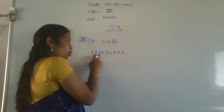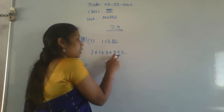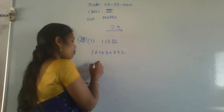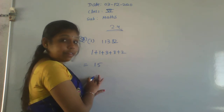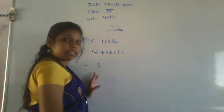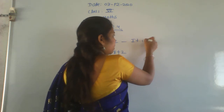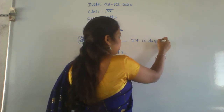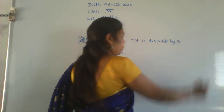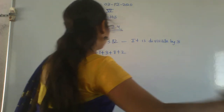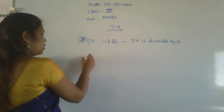First problem: the number is 11382. Calculate: 1 plus 1 plus 3 plus 8 plus 2. That is 1+1=2, 2+3=5, 5+8=13, 13+2=15. Whether 15 is divisible by 3? Yes, 3×5=15. Therefore it is divisible by 3.